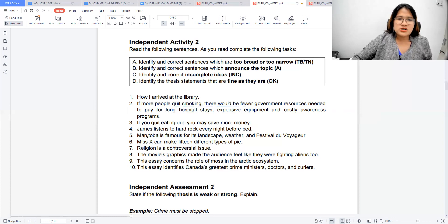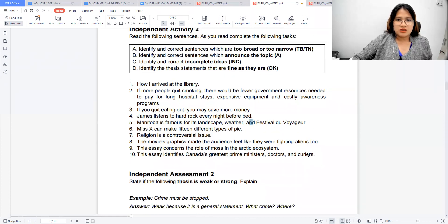And number five, Manitoba is famous for its landscapes, weather, and festival du voyageur. Correct me if I am wrong. So Manitoba, this is in Canada, if I'm not mistaken. Yes. So you are claiming that it's famous for its landscape, weather, and festival. I'm sure this could be proven. But if you're having an explanatory or exposition, this could be an okay thesis statement. So okay siya. The rest, you can do it already.